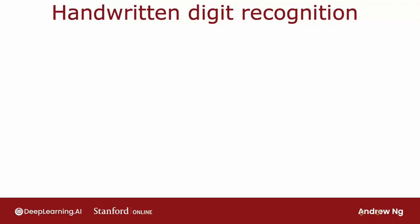I'm going to use as a motivating example handwritten digit recognition. And for simplicity, we're just going to distinguish between the handwritten digits 0 and 1. So it's just a binary classification problem where we're going to input an image and classify is this the digit 0 or the digit 1. And you get to play with this yourself later this week in the practice lab as well.